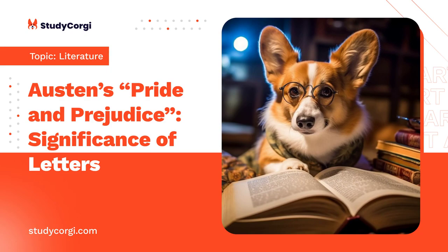Pride and Prejudice is a passionate epistolary novel written by Jane Austen in 1813. Letters are an important part of this novel as they are used to tell the story, develop the characters, and build the exposition of themes. Correspondence was a common way of communication during that era. Based on this fact, Jane Austen draws the reader's attention to characterization, themes, and stylistic devices and uses them to develop the plot. This essay delves into the role, purpose, and significance of letters in the novel. The paper also focuses on the literary techniques evident in the letters to declare the writer's intention to the audience.